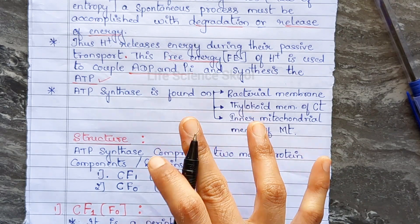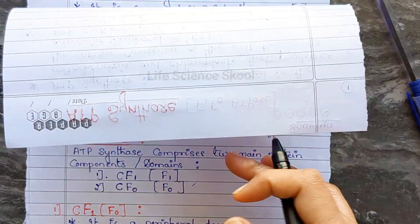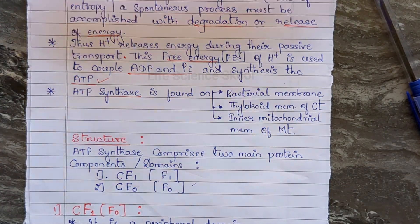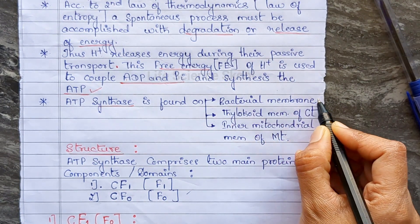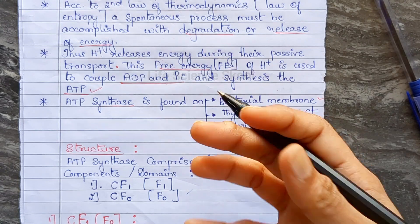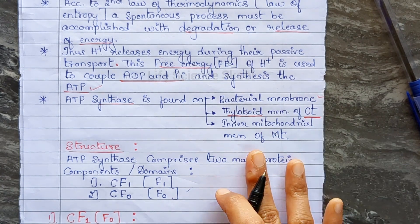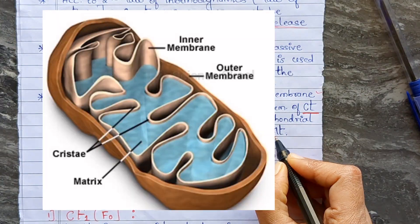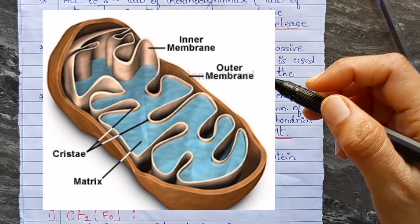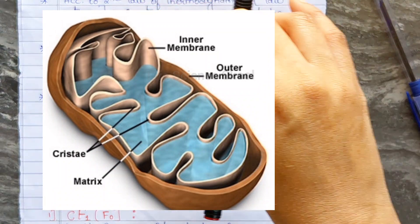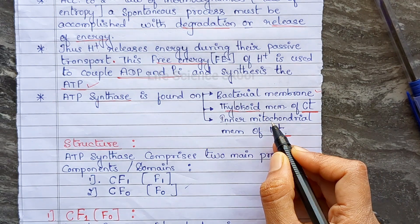ATP synthase is found on the bacterial membrane, and in plants on the thylakoid membrane of the chloroplast. It is also present on the inner mitochondrial membrane of mitochondria. You know the mitochondria structure — there is an outer membrane, inner membrane, and space between them. ATP synthase sits on the inner mitochondrial membrane.